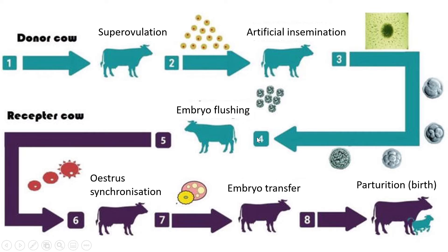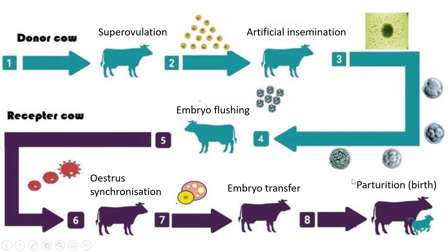At step four we have the embryo flushing, where all the embryos are removed from the donor cow's body. From step five onwards we look at the recipient cow, into whom the embryos will be placed. At number six, this cow is synchronized — meaning oestrus synchronization is used so the vet knows when she goes into oestrus. She is treated chemically to stop oestrus, keeping her in pro-oestrus, and then when she goes into heat the embryo is transferred at number seven. Only one embryo per cow is placed into her uterus to avoid birthing complications, and she carries the calf until parturition — the technical term for giving birth.